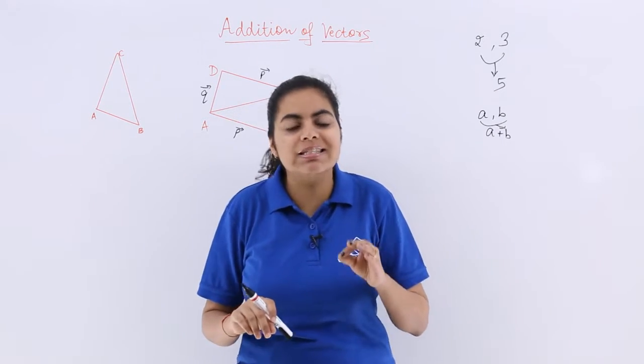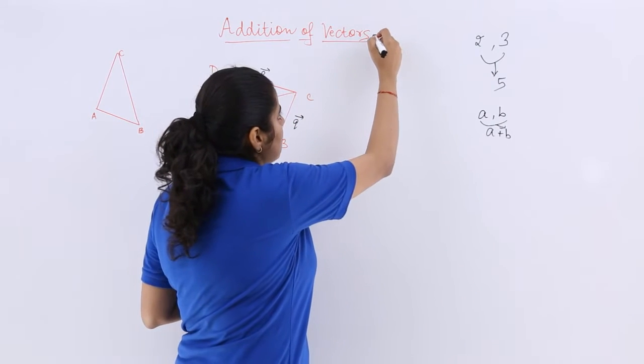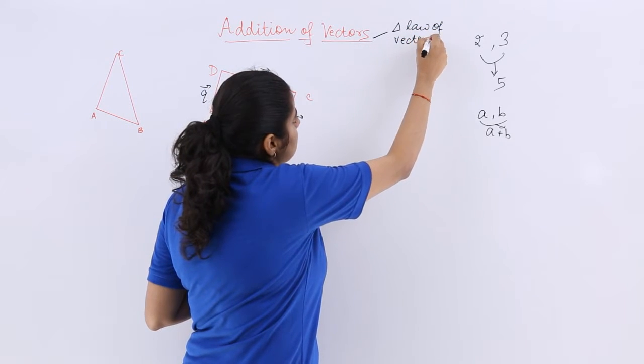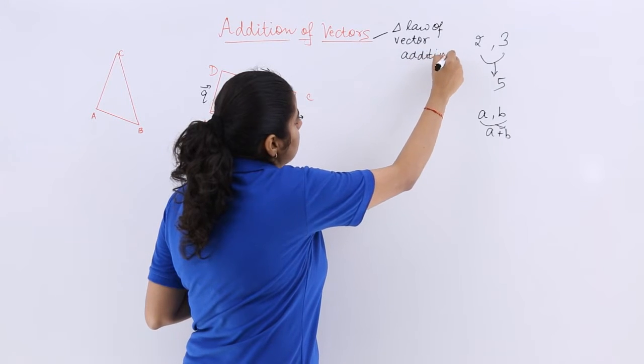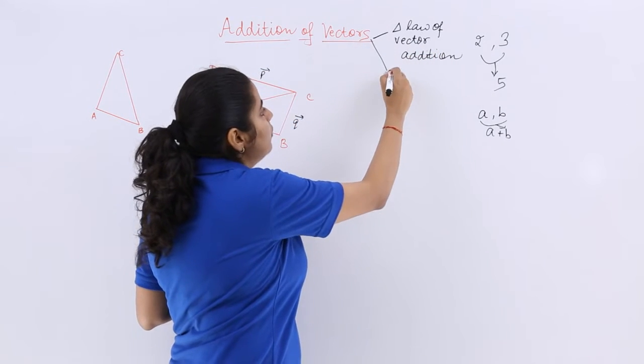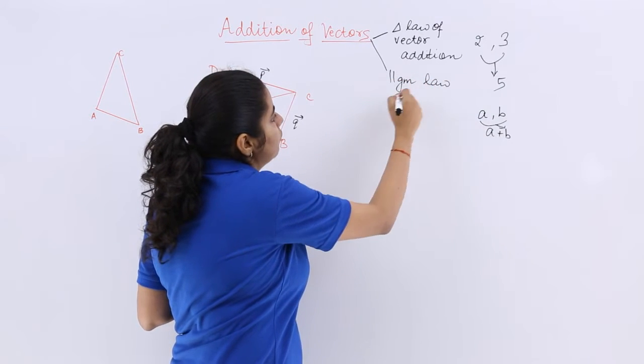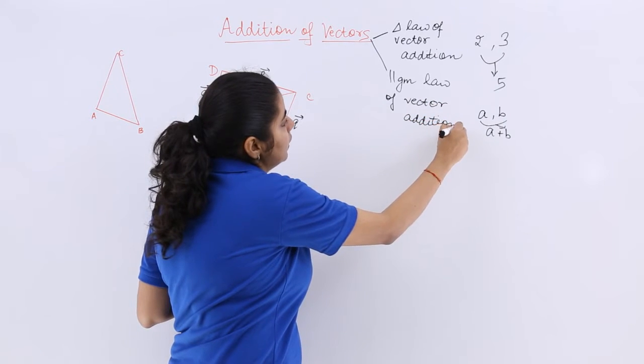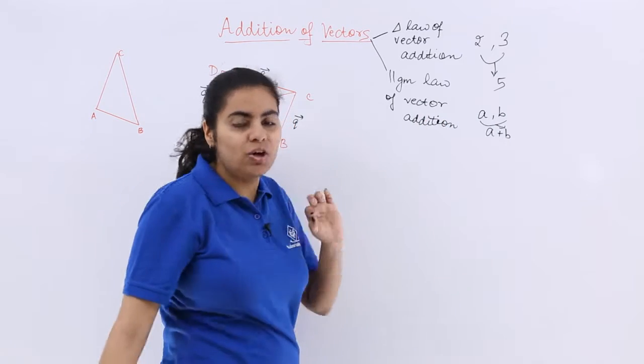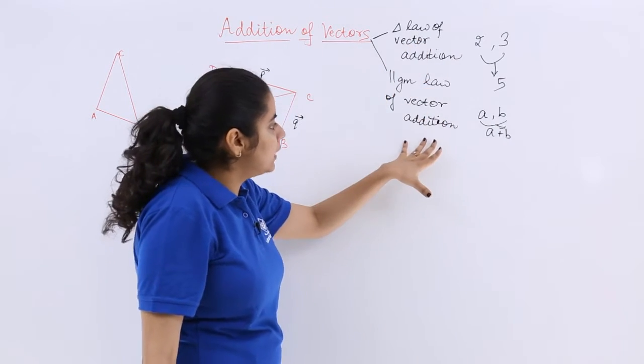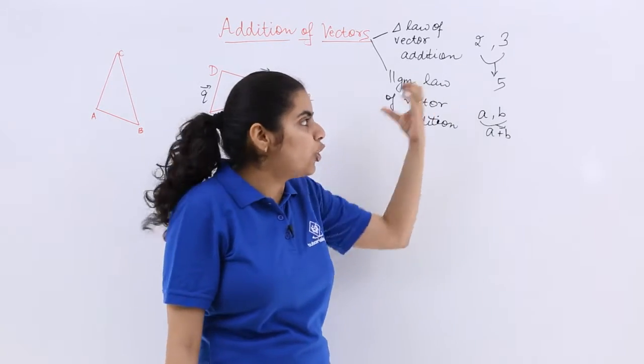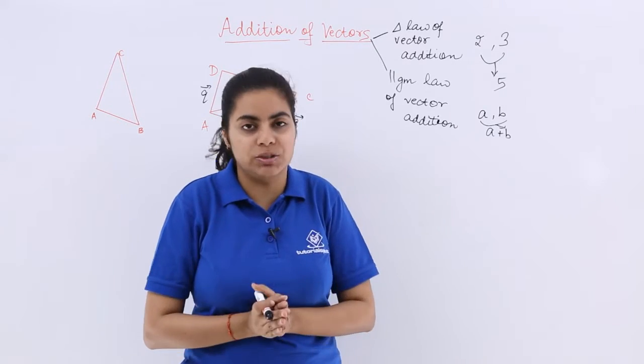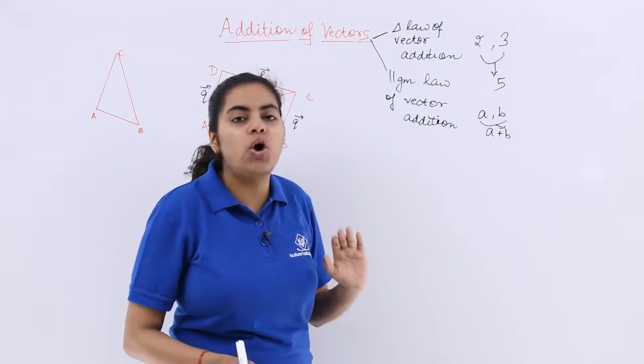So specifically, addition of vectors can be done by two rules. I have written parallelogram and triangle in short because I am just explaining the basic concept. Triangle law of vector addition, parallelogram law of vector addition - these are the two laws out of which any law you can use to get the answer for the addition. Let's move to triangle law of vector addition first.